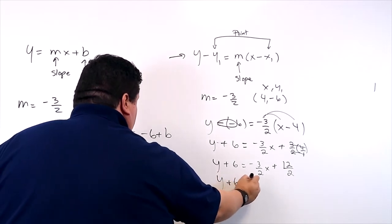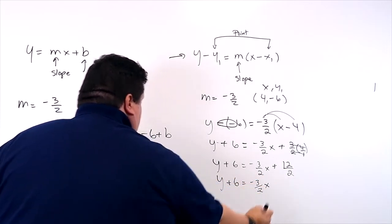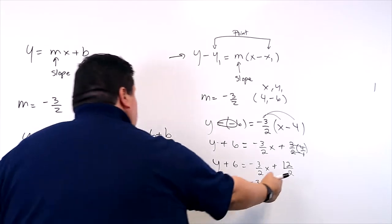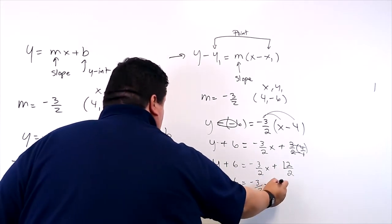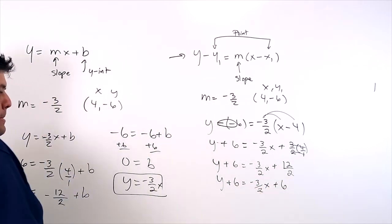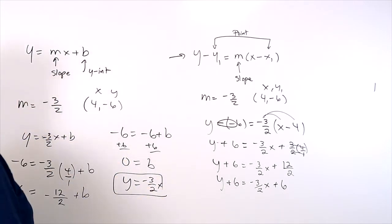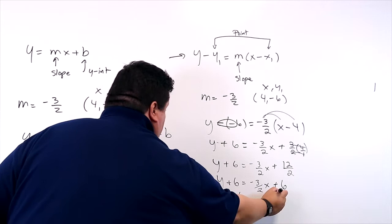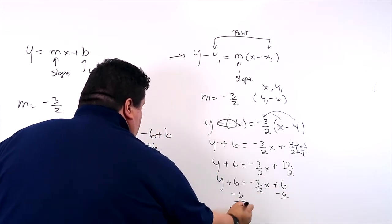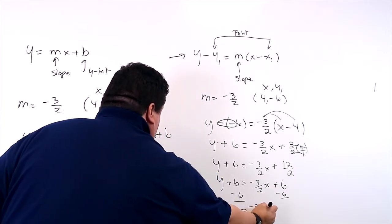Y plus 6 equals negative 3 over 2x. 2 goes into 12 how many times? 6. So this is going to be plus 6. And then we need to solve for y. So I'm going to subtract 6 on both sides.